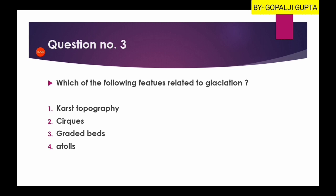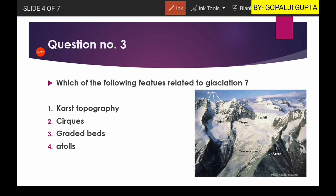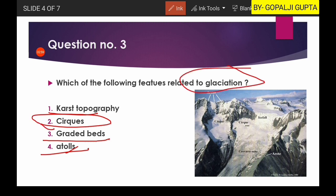Question number three: which of the following features is related to glaciation? Options are karst topography, cirques, graded bars, and atolls. Karst topography is related to groundwater action, graded bars are simply river bars, and atolls are a classification of coral reefs related to the oceans. Cirques are the product of glaciation — arc-like erosional surfaces formed by glacial activity, as seen in this picture.